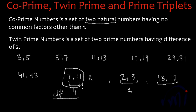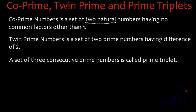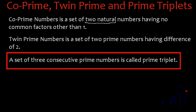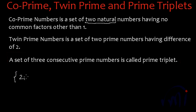Next is prime triplet. The definition of prime triplet is: a set of 3 consecutive prime numbers is called a prime triplet. There is no restriction about their difference — any set of 3 consecutive prime numbers can be called a prime triplet. For example, 2, 3, and 5 is a set of prime triplet, and 7, 11, and 13 is also a set of prime triplet.